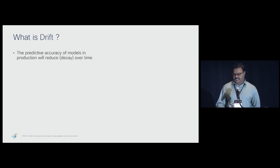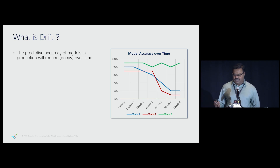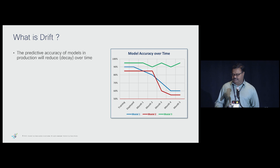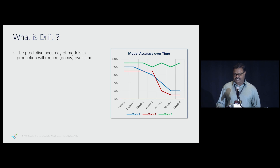So what is drift? The predictive accuracy of models goes down over time. This happens again and again for machine learning models. The green line is one that is not drifting — the accuracy stays within the band. The blue line is drifting gradually, accuracy goes down over time. The red line is a use case where the application suddenly drops in accuracy at a given point in time. You would see all three types of behaviors in production typically.